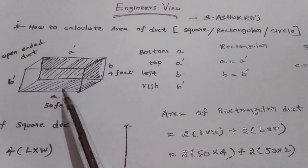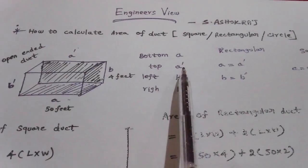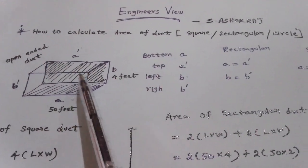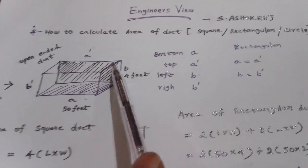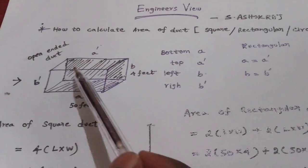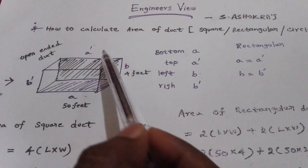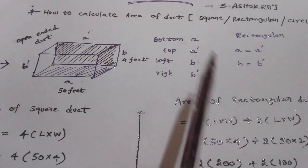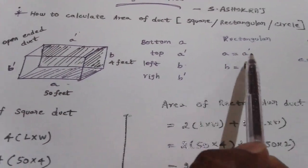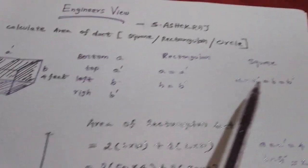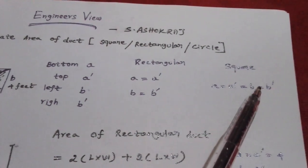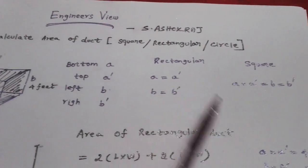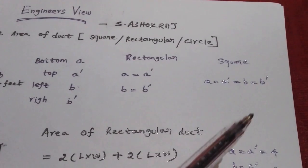If you look at A and A', this bottom side is A'. The left side means A'. If you draw the front side it is B'. So in a rectangle, A equals A' and B equals B'. In a square, all sides are equal — A equals B. So opposite sides are equal in a rectangle, and all sides are equal in a square.